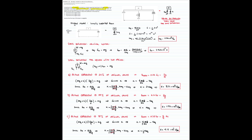With that, we finish our problem. We initially had a simply supported beam as the model, then added a spring, and determined the required spring constant to reduce deflection by 25%, 50%, and 75% of the original value.